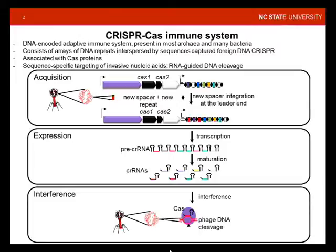CRISPR-Cas systems form an adaptive immune system that is DNA-encoded, present in the large majority of archaea — about 85% to 90% — and almost half of bacteria, 44% to 48%. Those loci are quite peculiar and consist of arrays of DNA repeats that are interspaced by sequences called spacers.